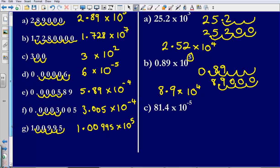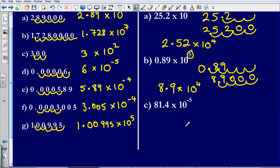Lastly question C, I've got 81.4 times 10 to the negative 5. So again, let's write this out as we would do usually, 81.4. This time it's times 10 to the negative 5.